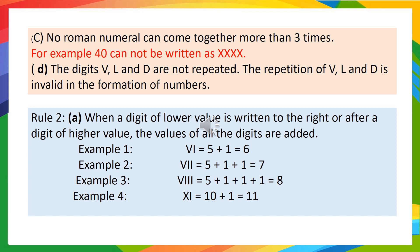In example 2, you can observe VII. The symbol of 5 is greater than the symbol of 2, so we will add the symbols and the answer will be 7.